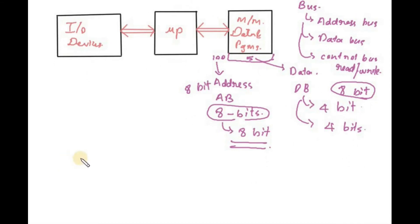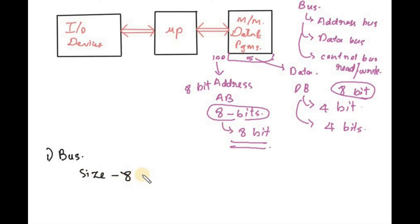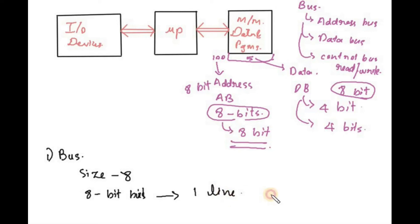A bus is a collection of lines. The size of a bus indicates the number of lines. For example, if a bus size is 8-bit, the number of lines is equal to 8. Therefore, the number of bits the bus can carry is determined by its lines — one line carries one bit of information. So an 8-bit bus has 8 lines, each carrying one bit.